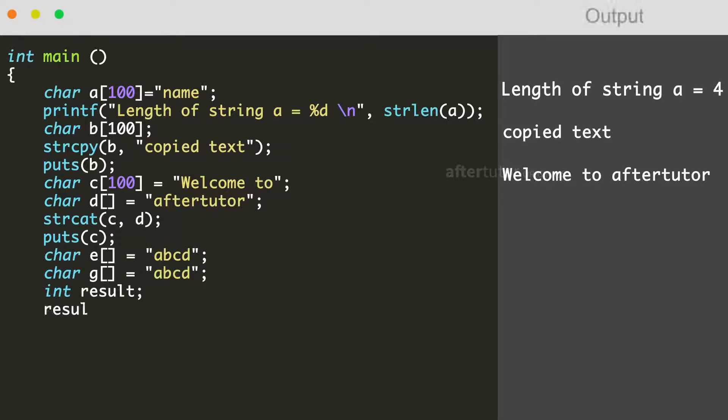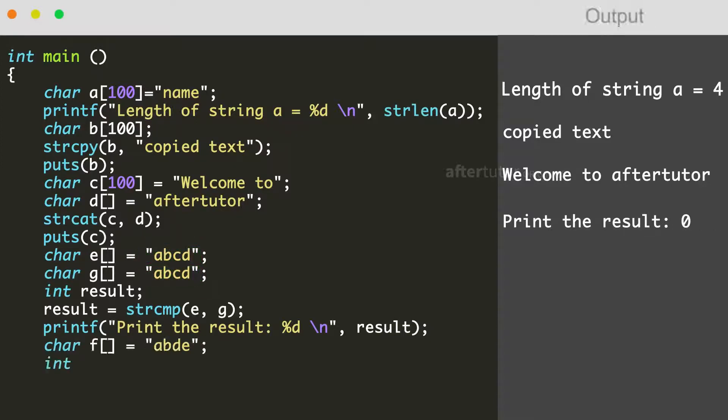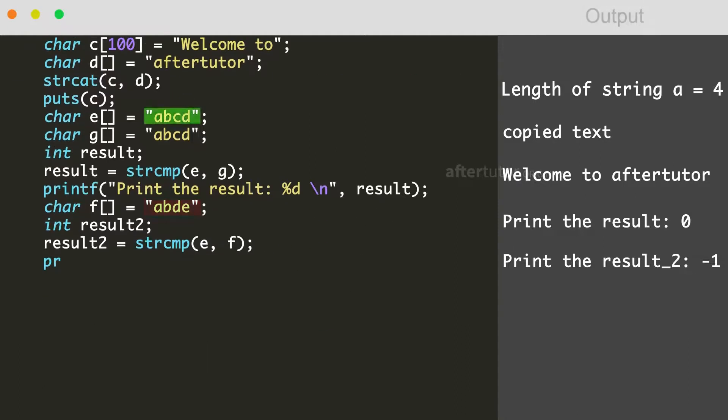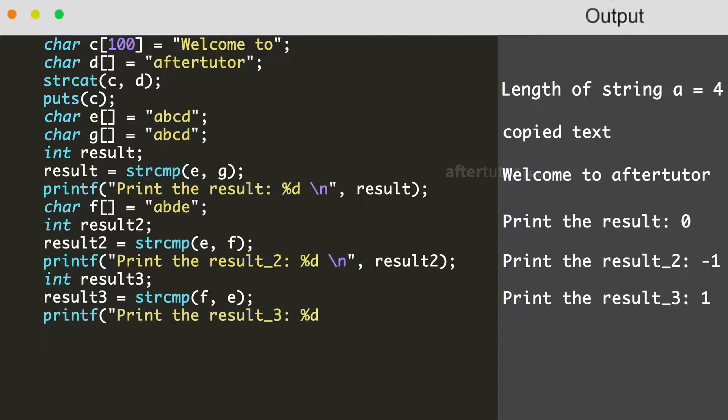String compare function compares two strings, and if both the strings are equal, it displays zero. If the string one is less than string two, it will display the value less than zero. And if the string one is greater than string two, it will display the value greater than zero.